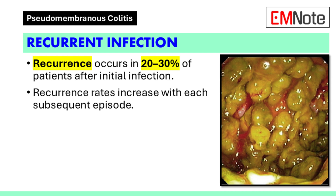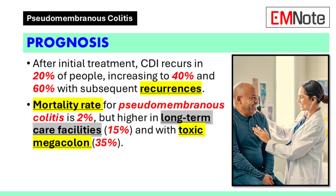Recurrent infection: Recurrent Clostridium difficile infection occurs in 20 to 30% of patients after the initial infection, with recurrence rates increasing with each subsequent episode. Prognosis: After initial treatment with metronidazole or vancomycin, infection recurs in about 20% of people, increasing to 40% and 60% with subsequent recurrences. The mortality rate for pseudomembranous colitis is around 2%, but higher at 15% in long-term care facilities and 35% with toxic megacolon.